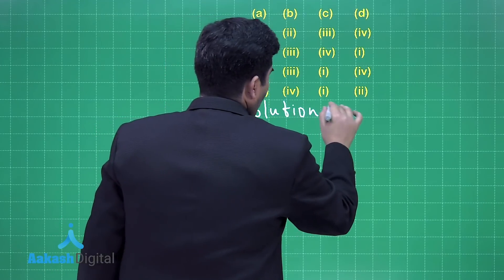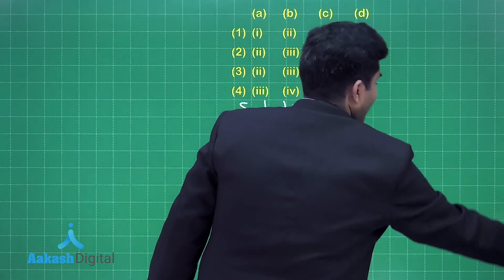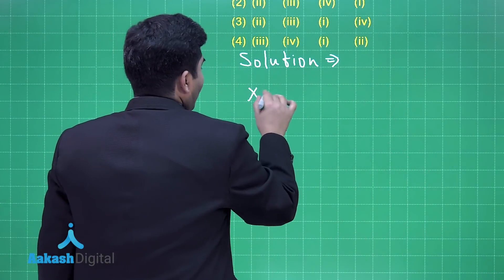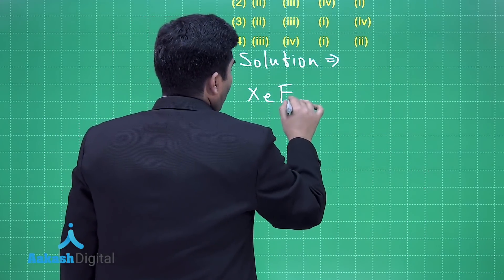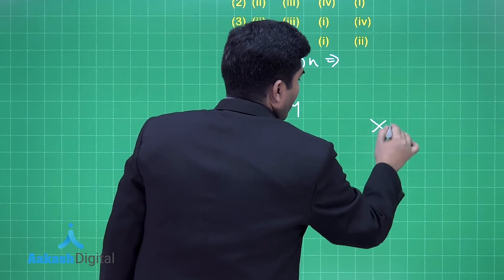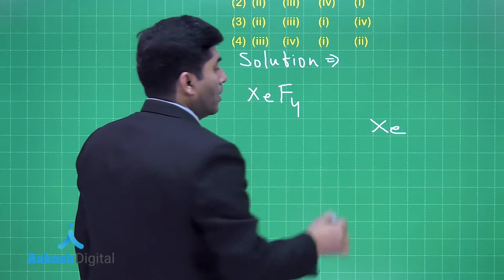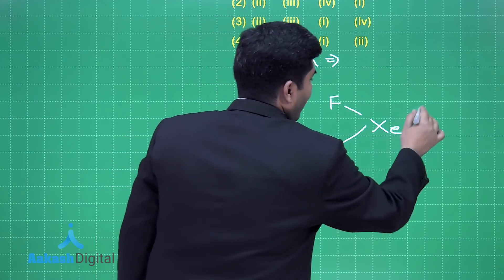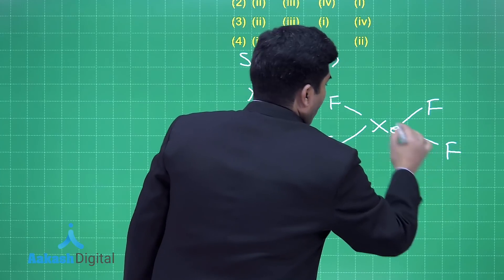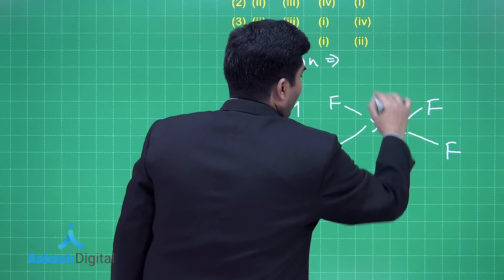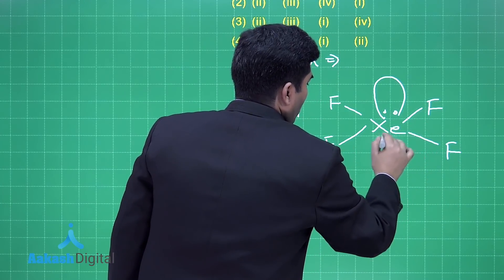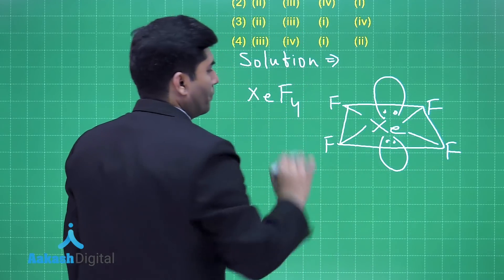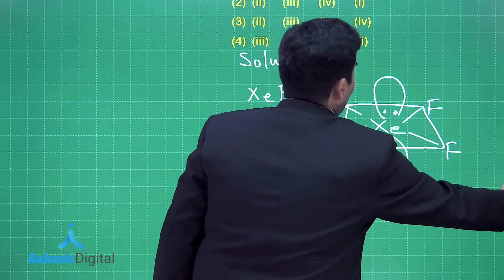First one is XeF4. Xenon has eight electrons and makes four bonds. With four bonds and two lone pairs, it is square planar. So XeF4 is square planar.